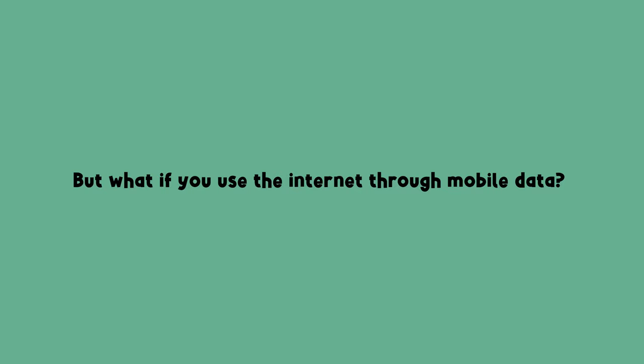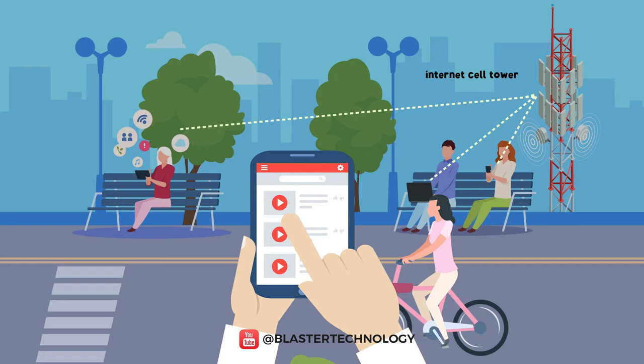But what if you use the internet through mobile data? Well, the signal is transmitted through the same optical cables to a cell tower. And from here, the internet is transmitted to you in the form of electromagnetic waves.